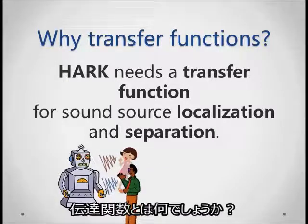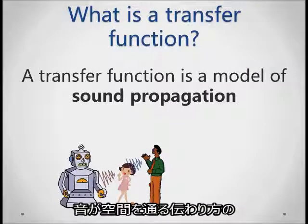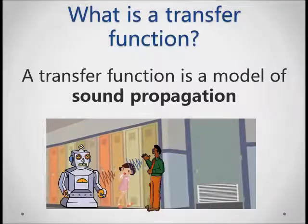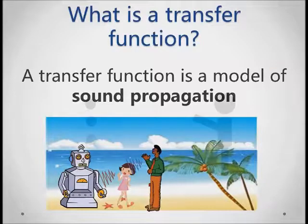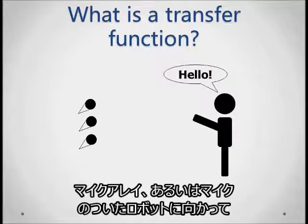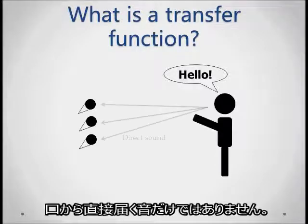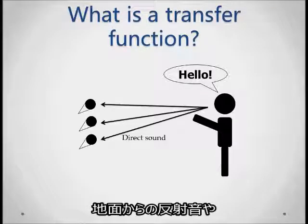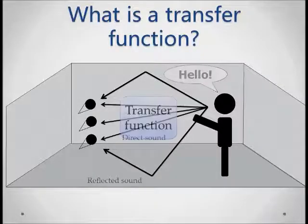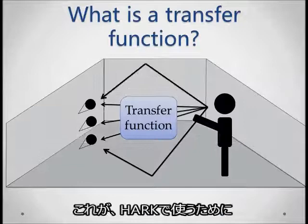But what is a transfer function? A transfer function is a model of how sound propagates through space. In practice, sound propagates differently depending on the environment. For example, if you speak across the room towards an array of microphones possibly mounted on a robot, the sound captured is not only the sound coming directly from your mouth, but also includes reflections from the ground or walls. The transfer function describes how the environment affects the sound, and this is what we need to measure for use with HARK.